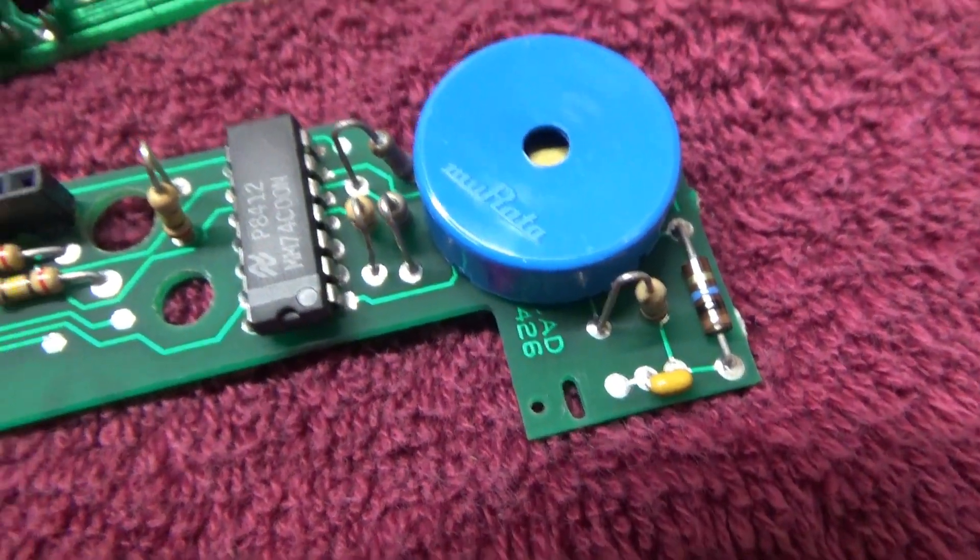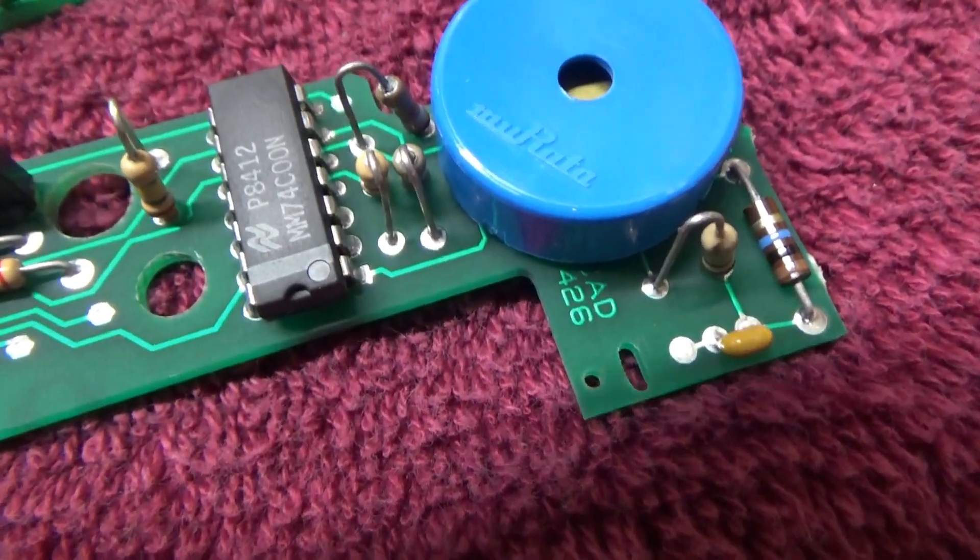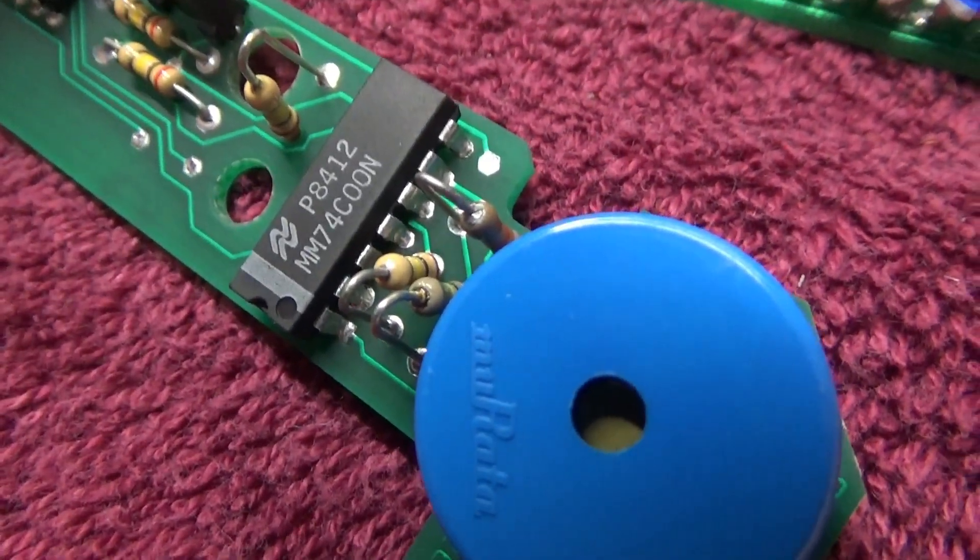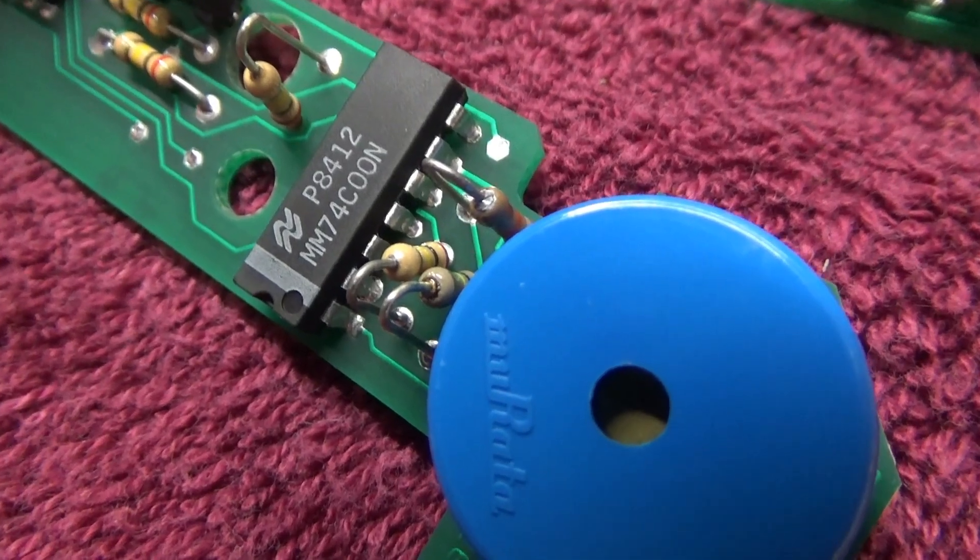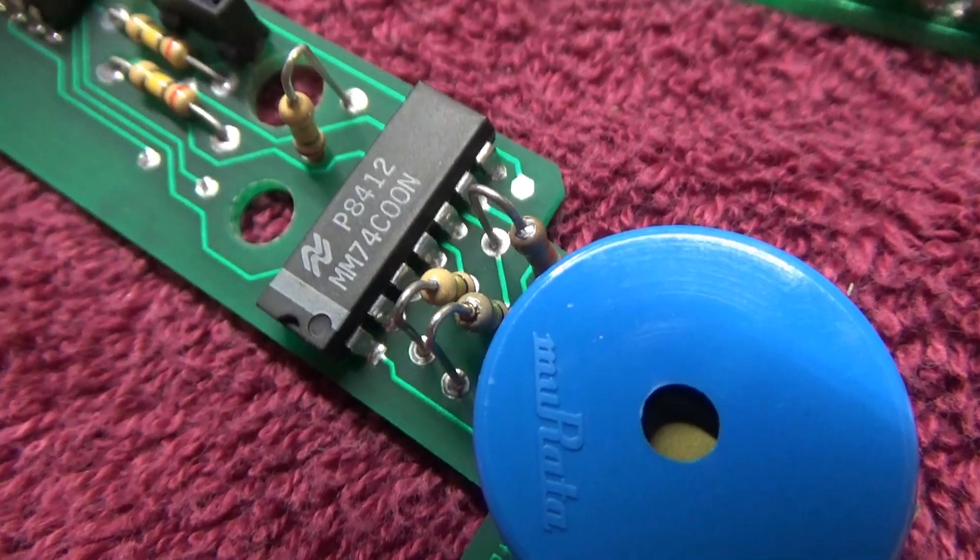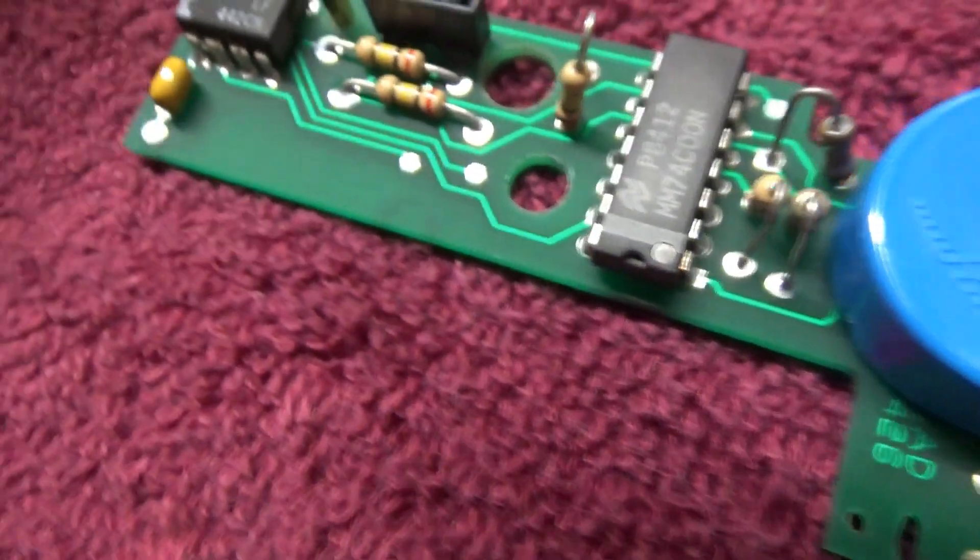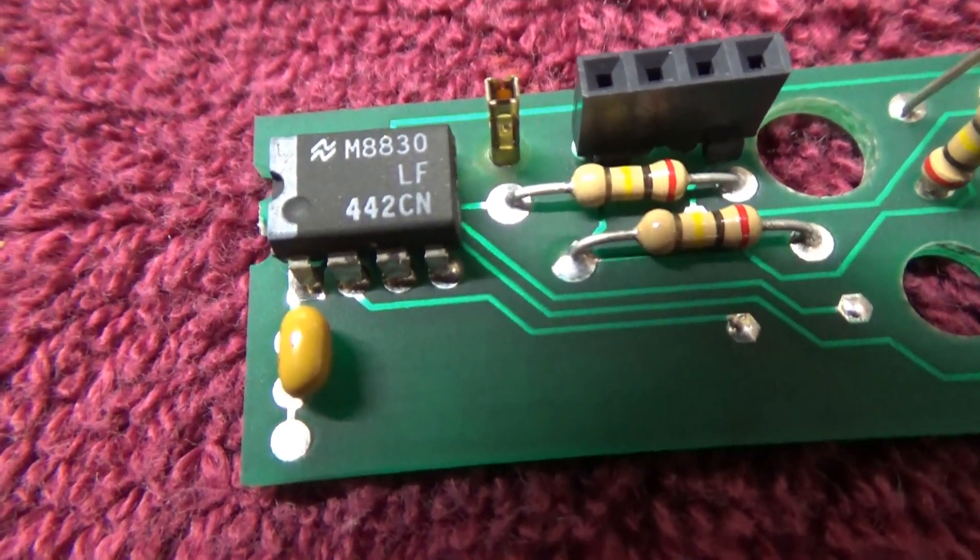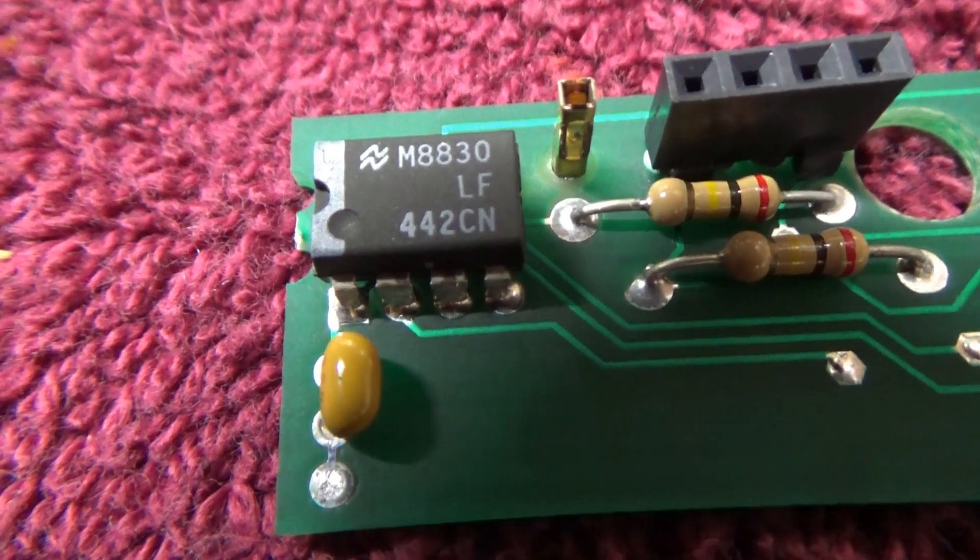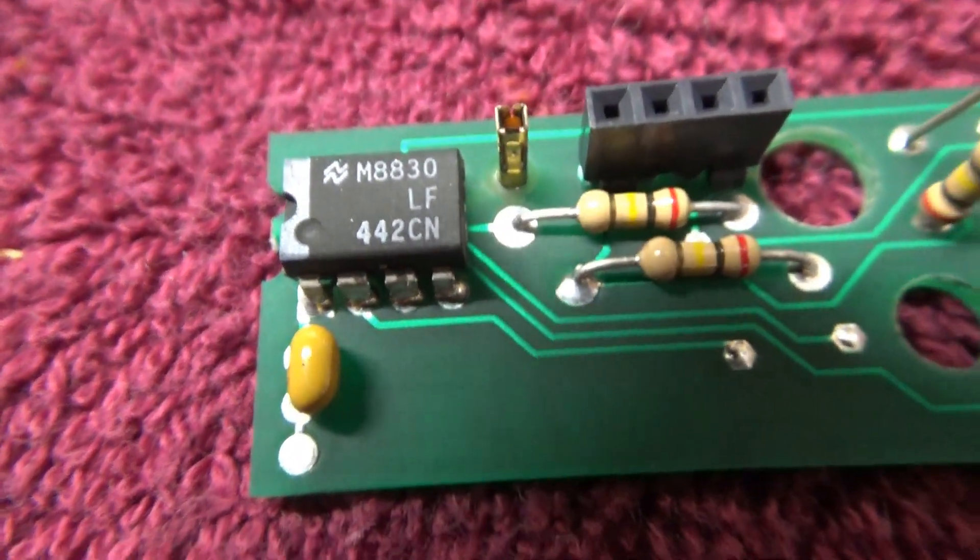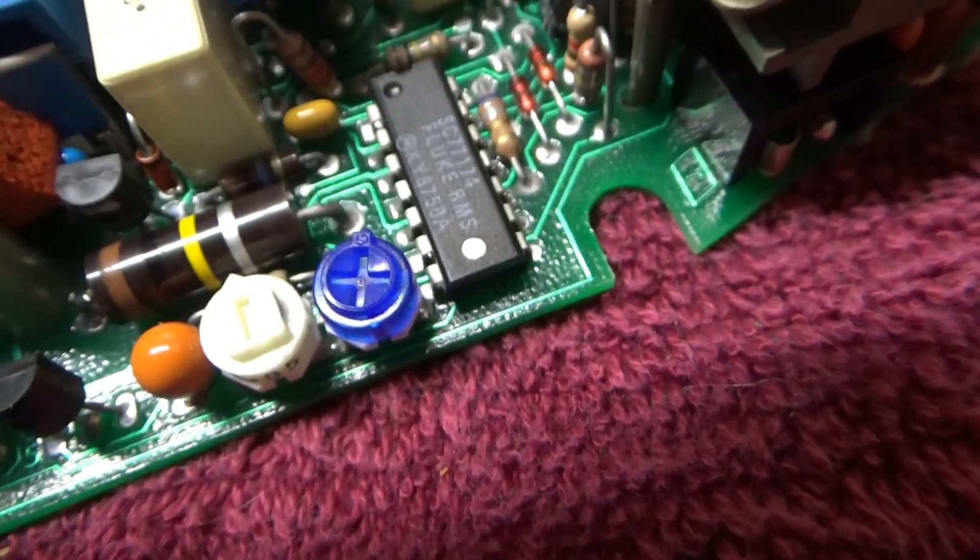And there's the little daughter board I just pulled off. It's got a 7400, I forgot what that is, NAND gate? Quad NAND gate? I don't remember my logic that well. And whatever that chip is maybe that does some of the conversions for the True RMS. There's another Fluke chip right there.